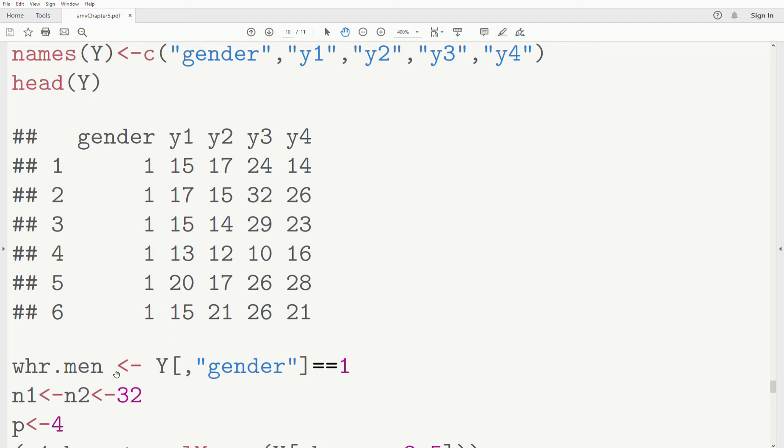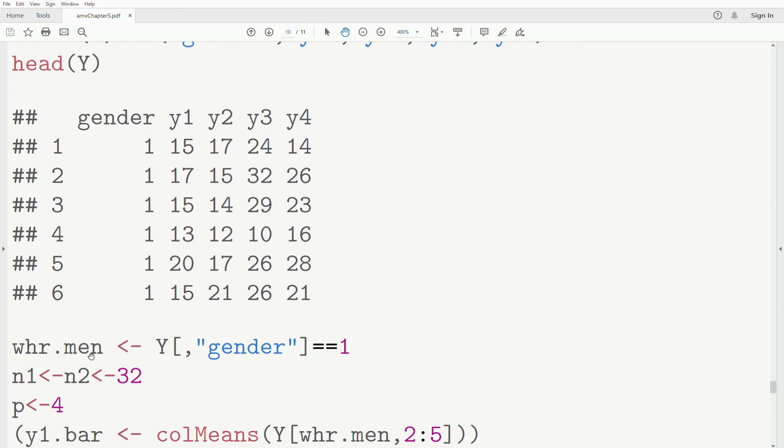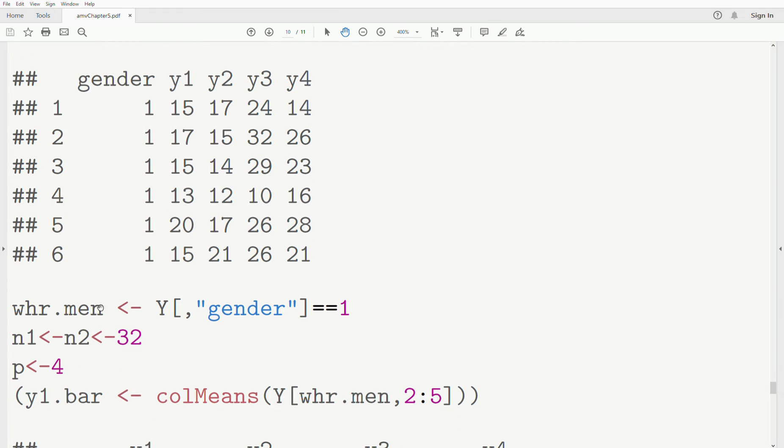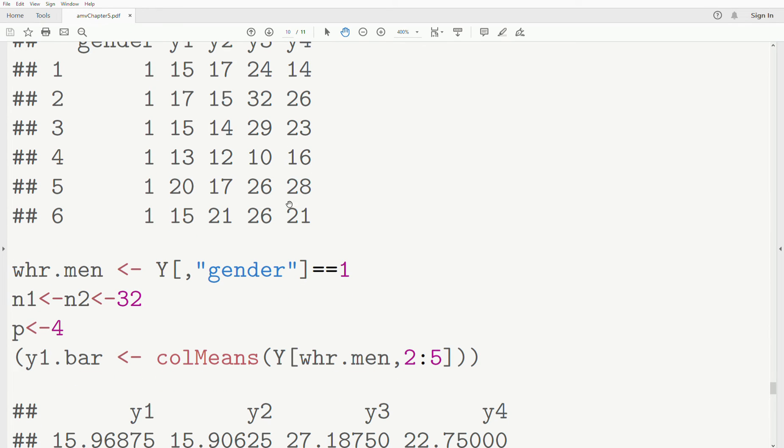We let where.men equal Y$gender==1. This creates a vector of trues and falses wherever there's a one, it's true, and false otherwise. Here, N1 and N2 both have a sample size of 32. P is four, four dimensions.